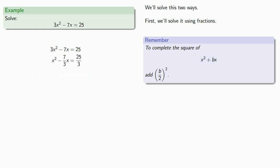And then to complete the square of x² + bx, add (b/2)². Now b is our coefficient of x, which is -7/3. And so to complete the square, we need to find (b/2)², which will be 49/36.